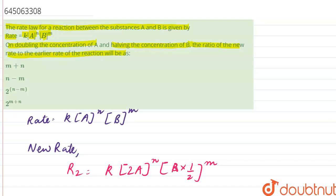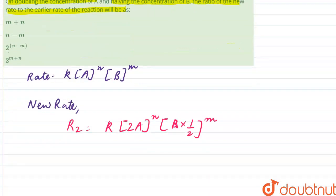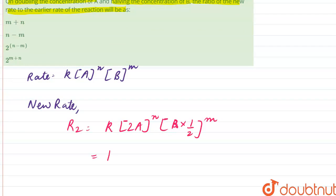So after simplifying, we get it as K times A raised to power N times B raised to power M times 2 raised to power N upon 2 raised to power M.